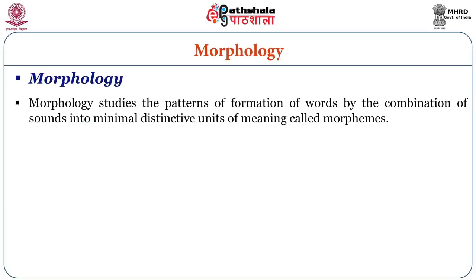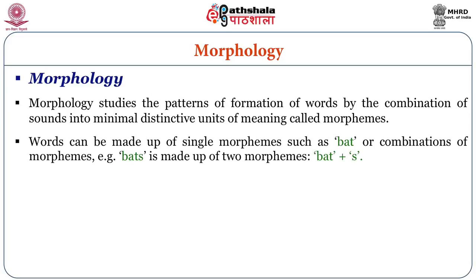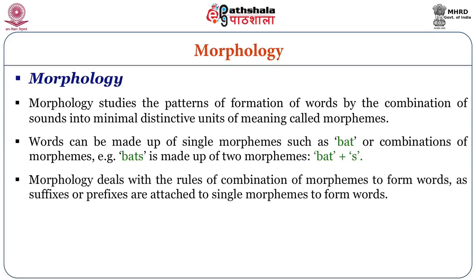We also have morphology, which studies the pattern of formation of words by the combination of sounds into minimal distinctive units of meaning called morphemes. Words can be made up of single morphemes, such as 'bat', or combinations of morphemes, like 'bats', which is made up of two morphemes: bat plus s. Morphology deals with the rules of combination of morphemes to form words — for example, why we add just 's' and not 'es' to form 'bats'. These rules are being studied.